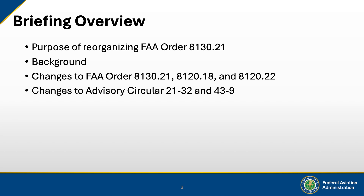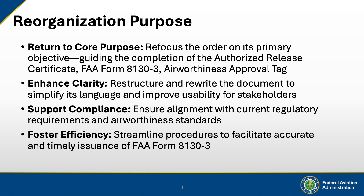This structure will help you understand not just what changed, but why it changed and how it affects your work. The reorganization of FAA Order 8130.21 was motivated by four main objectives: first, to refocus the order on its core purpose — guiding the completion of the Authorized Release Certificate, FAA Form 8130-3, the airworthiness approval tag; second, to improve clarity by restructuring and rewriting the document with simpler language to enhance usability for all users; third, to ensure compliance by aligning the order with current regulatory requirements and airworthiness standards; and lastly, to increase efficiency through updated procedures that promote the accurate and prompt issuance of FAA Form 8130-3.